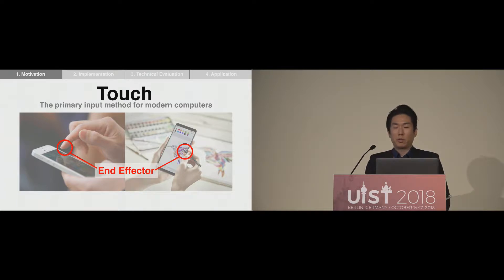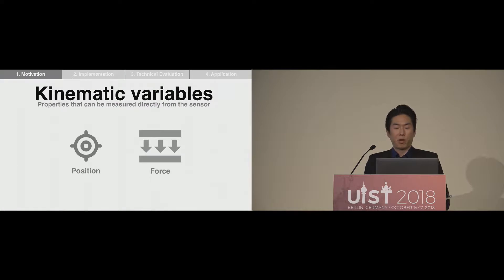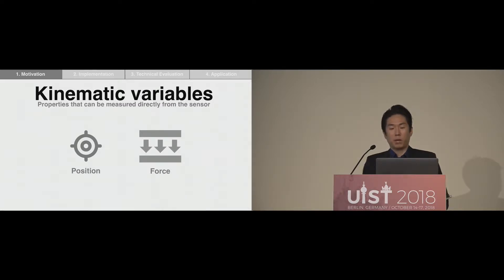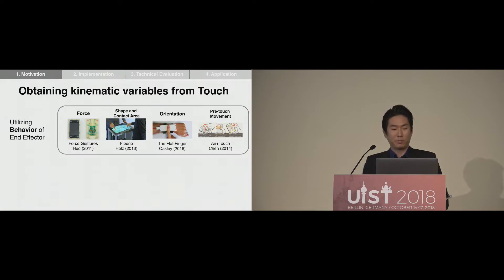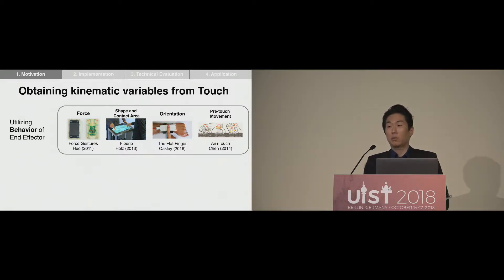During the touch interaction, we usually use our finger or stylus as an ND vector. Prior studies and existing commercial touch methods were focused on utilizing the kinematic variables of the touch phenomena. The kinematic variables are the properties that can be measured directly from the sensor, such as position and force. Various interactions have been proposed that allow the use of kinematic variables, such as ND vector behavior including force, shape, contact area, orientation, and pre-touch movement.